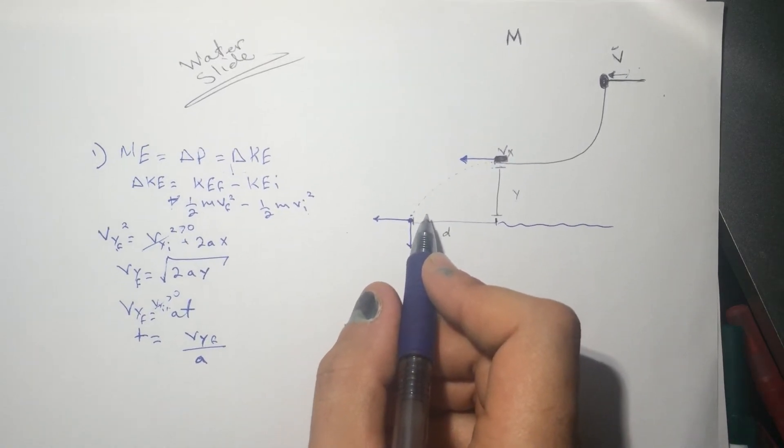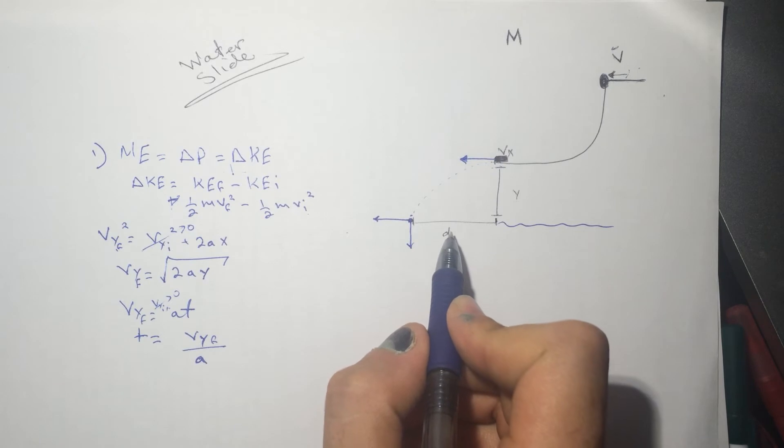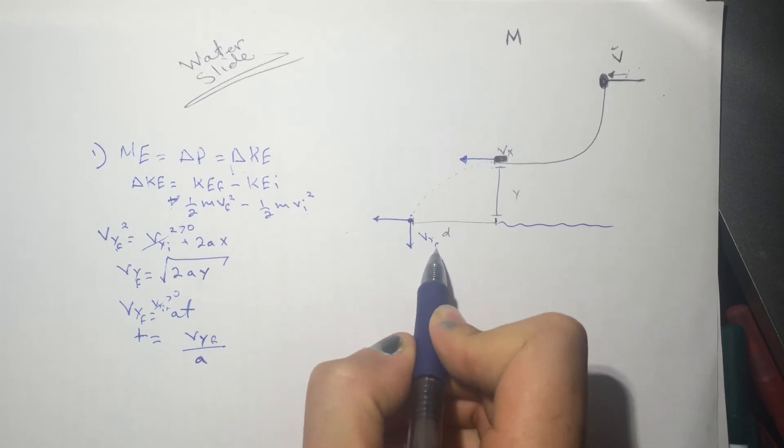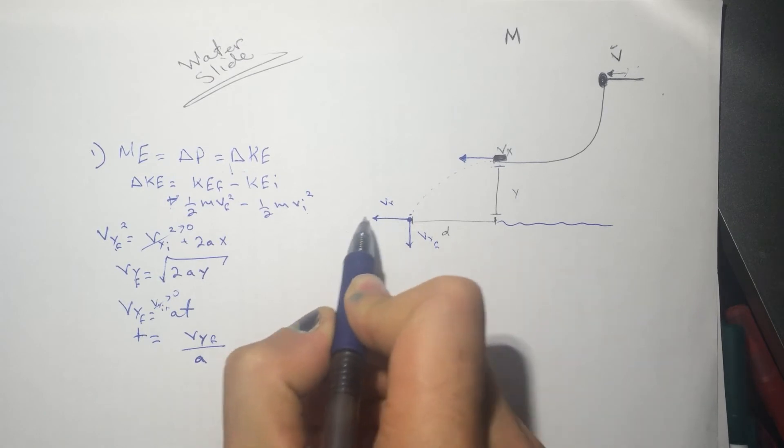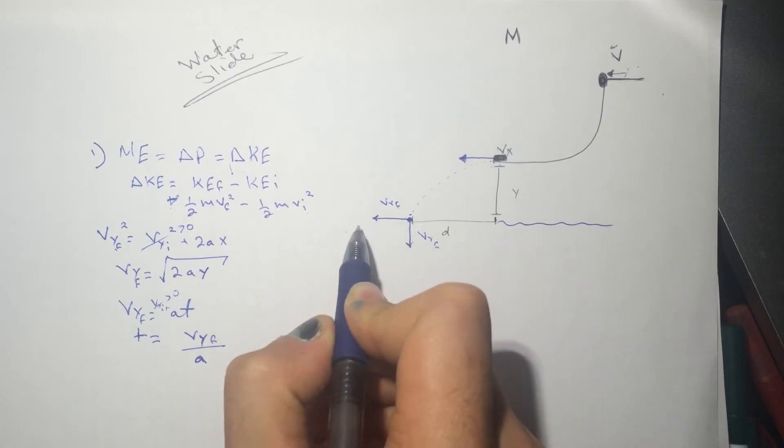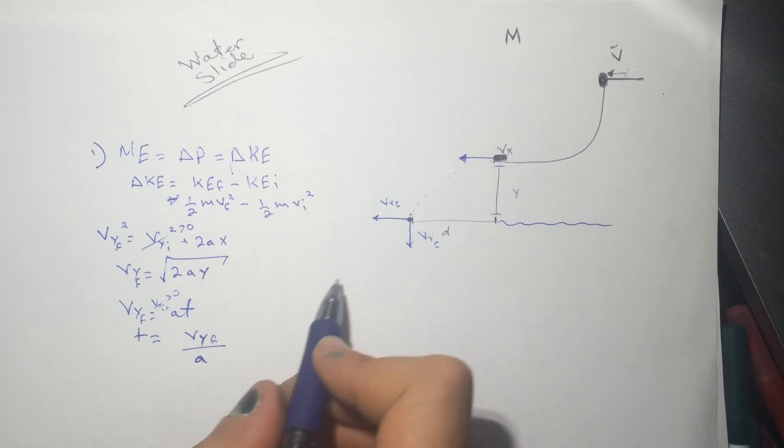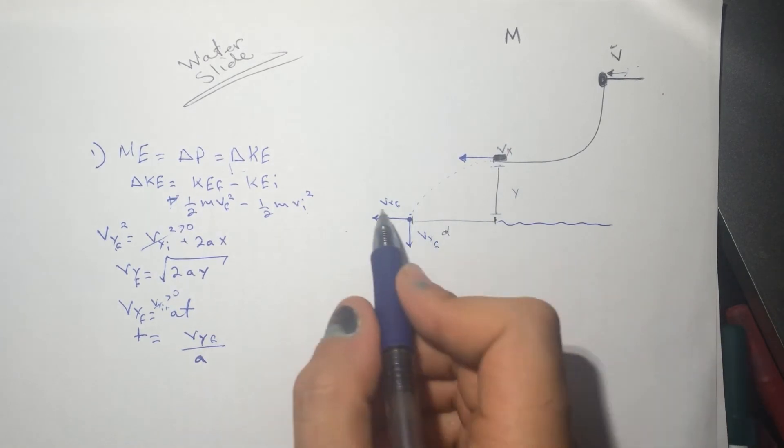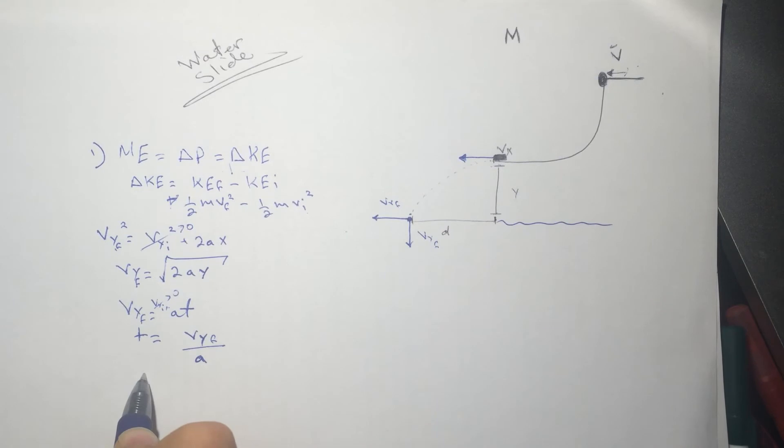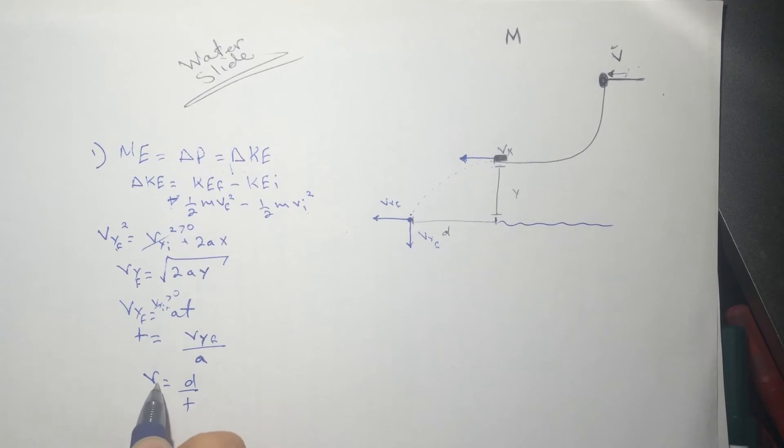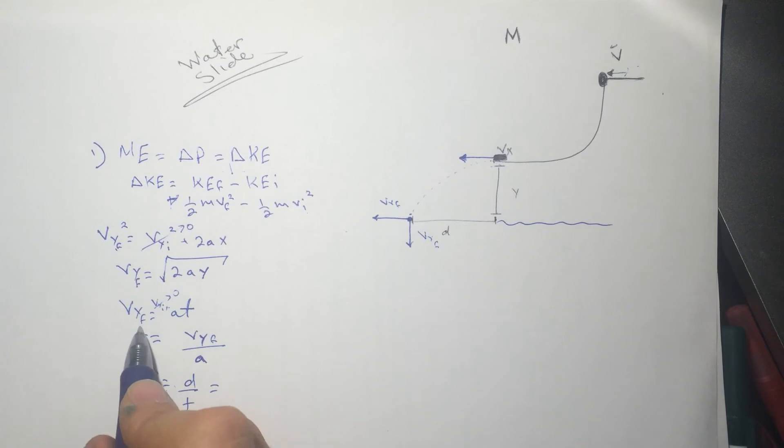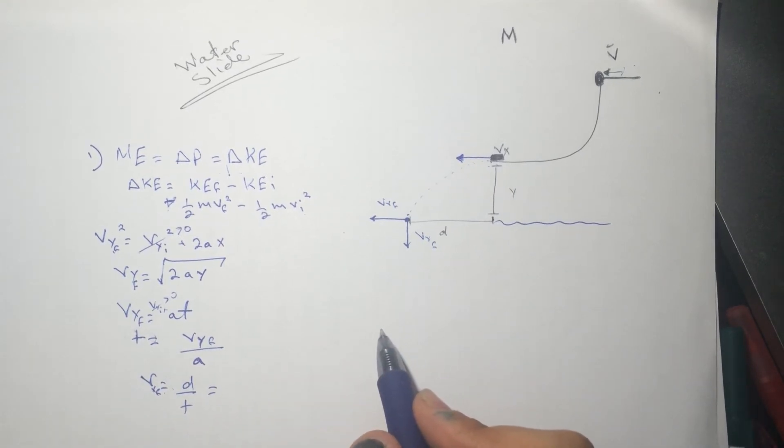So after we find the time, we can figure out what is the VX here. So we know VY final here. We just need to know the VX final here, which is the same as here. So we have D and we have the time so we can find the VX. So V is equal to distance divided by time. This is VX final. So you have the D. It's a given. And the T, you're going to find it here in this case.